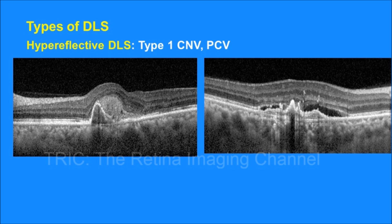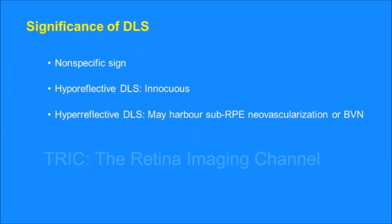The DLS was initially thought as a specific sign of IPCV. However, the recent understanding about DLS considers it as a non-specific sign which is seen in various retinal conditions. Hyporeflective DLS seen in central serous chorioretinopathy is innocuous and usually not associated with neovascularization. However, hyperreflective DLS may harbor neovascularization or branching vascular network.